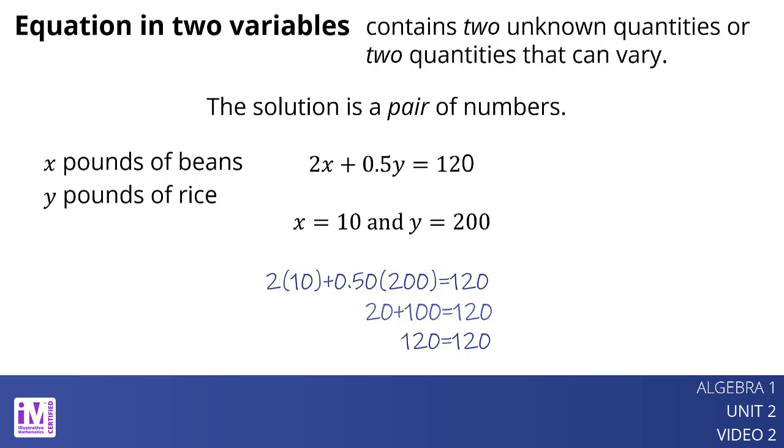X equals 10 and y equals 200 is a solution because 2 times 10 plus 0.5 times 200 equals 120 is a true statement. If we buy 10 pounds of beans and 200 pounds of rice, the cost will be $120.